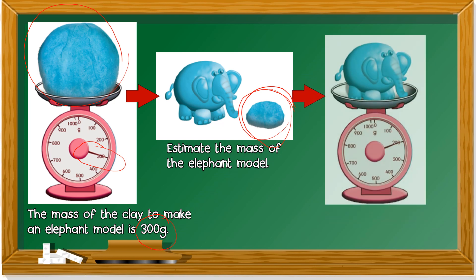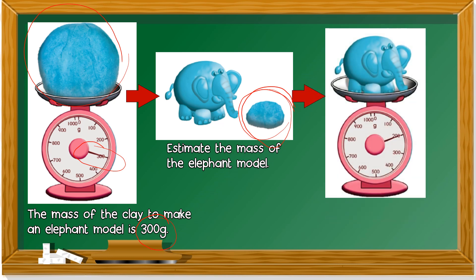Let's look at the next one. So, actually, the mass of the elephant model is 200 gram. If you guess somewhere near 200 gram, maybe 180, 190, or 210, 220, you are also correct. Quite accurate.